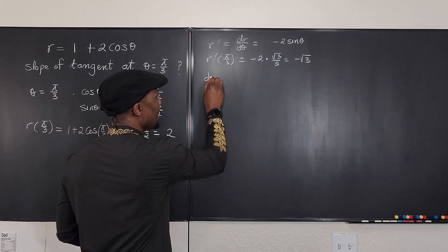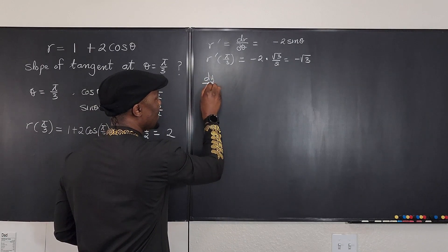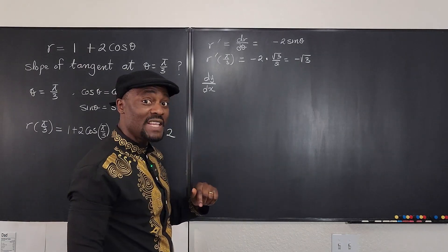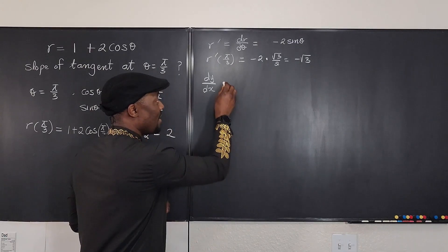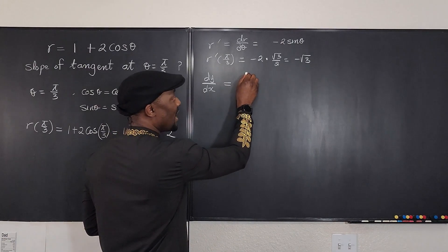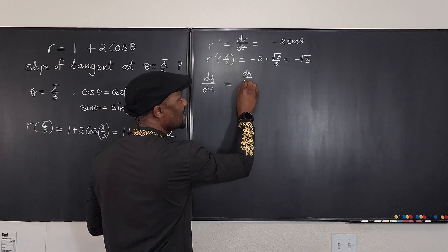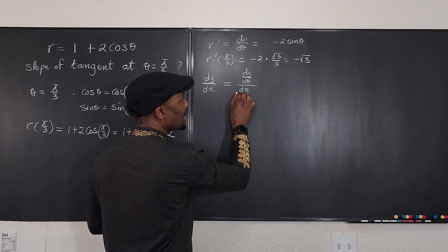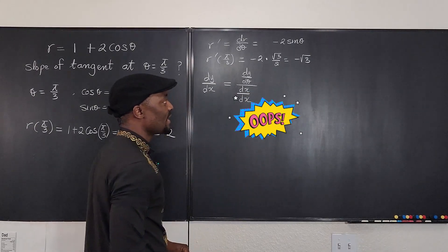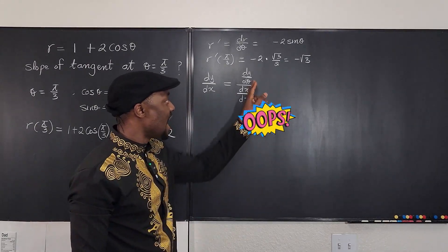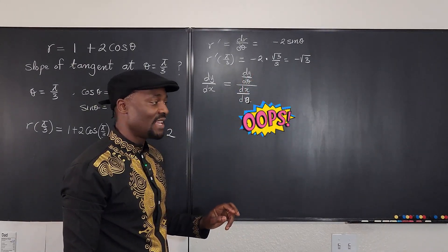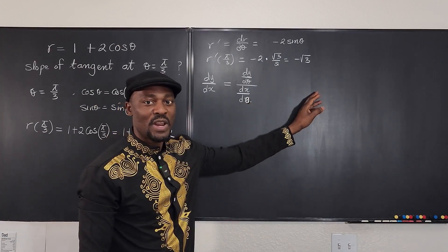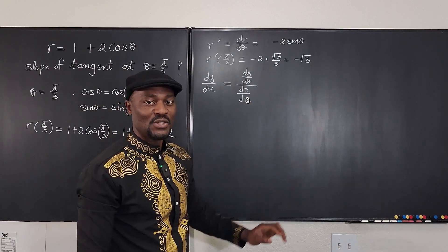Remember the slope is dy/dx. But dy/dx is only computed by writing dy/dθ over dx/dθ. So all you need now is to know what dy/dθ is and what dx/dθ is, and you can plug them in here. Whatever you get is your answer.